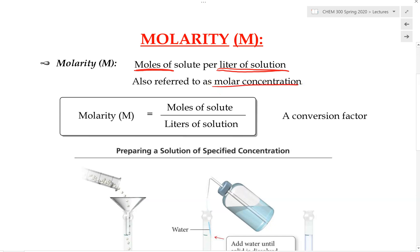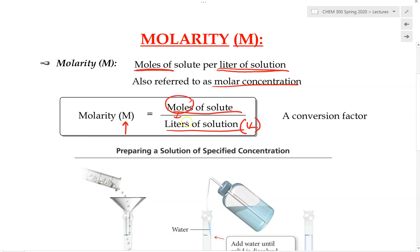Whenever we say molar concentration of a solution, we are simply referring to its molarity. By definition, molarity — abbreviated with the uppercase M — is equal to moles of solute over liters of solution. The volume of solution is often set equal to one liter, because we take the amount of moles and divide by whatever liters we have, converting the denominator into one liter.